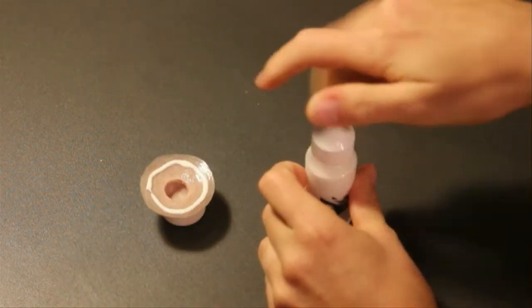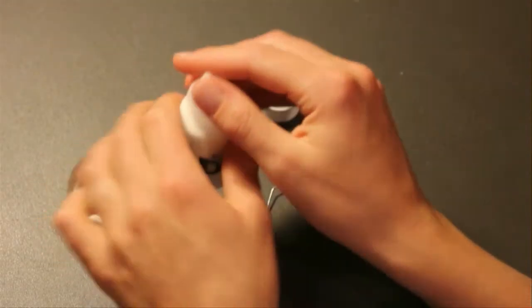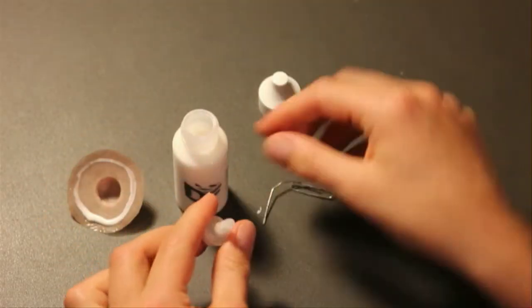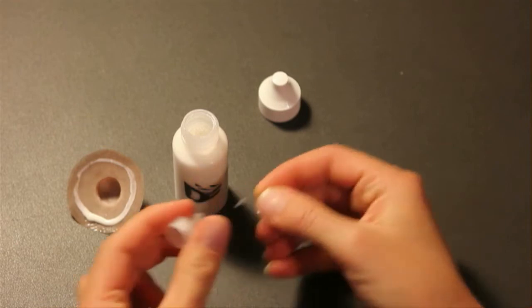If the adhesive dropper clogs, insert a paperclip from both sides to clear it. If desired, a cotton tip swab can be dipped directly in the bottle.